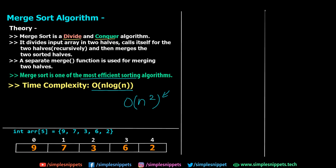Merge Sort is not the only algorithm that uses divide and conquer. Binary Search, which is a searching algorithm, also uses divide and conquer — it divides the entire array into two parts and searches only the part where the value falls within the range. The array must be sorted first for Binary Search to work, but it is very efficient compared to linear search because of the divide and conquer approach.